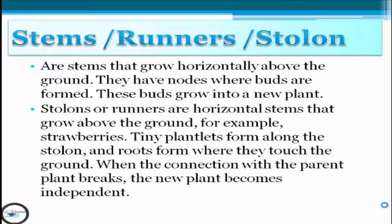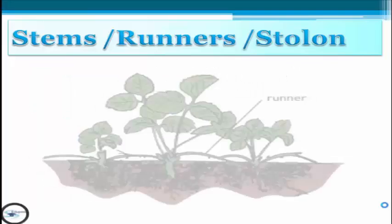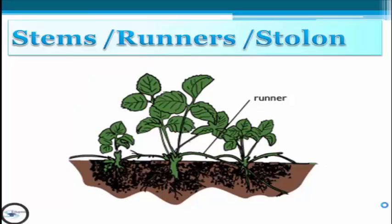For example, strawberries. Tiny plantlets form along the stolon and roots form where they touch the ground. When the connection with the parent plant breaks, the new plant becomes independent. As you can see in the picture, this is the stem running to another one and it produces the same as the mother plant.